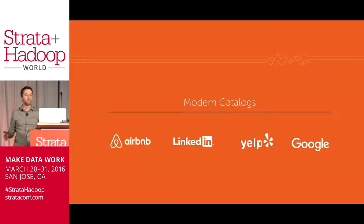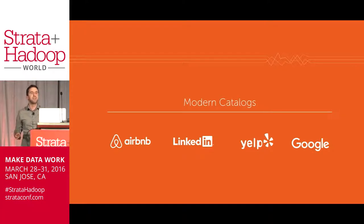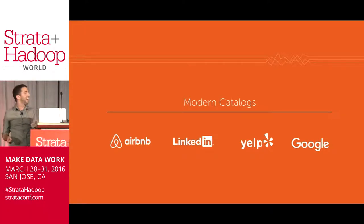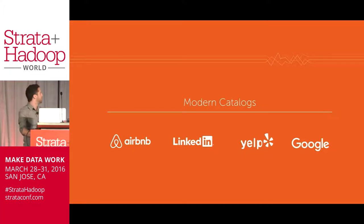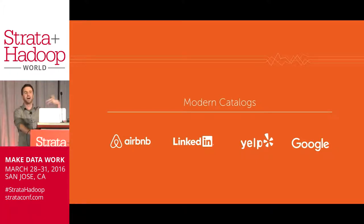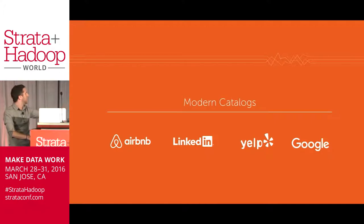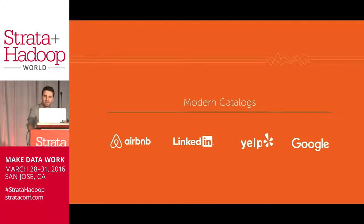Catalogs are really all around us. Today we're going to talk about how to make finding data — the right data asset in your organization — as easy as finding the right place to stay with Airbnb, the right person to hire on LinkedIn, the right restaurant to eat at with Yelp, the right web page to read on Google.